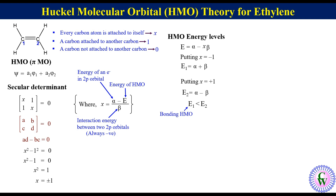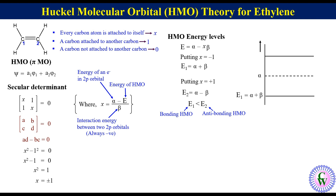Since beta has a negative value, E1 is less than E2. E1 is the bonding while E2 is the anti-bonding molecular orbital. Thus we can draw the Hückel molecular energy level diagram for ethylene showing alpha, E1, and E2. Since there are two pi electrons, in the ground state they will occupy E1.